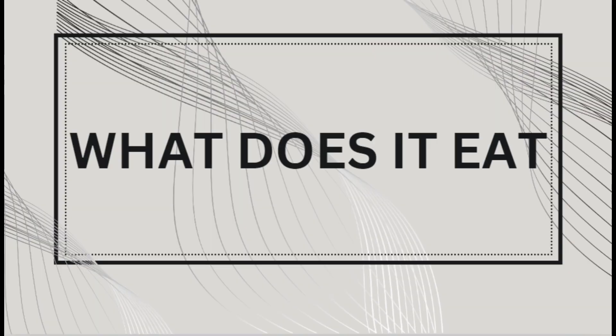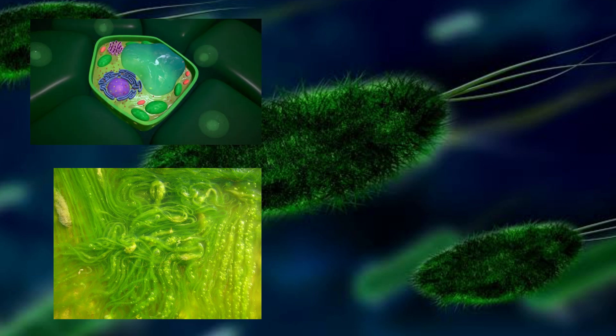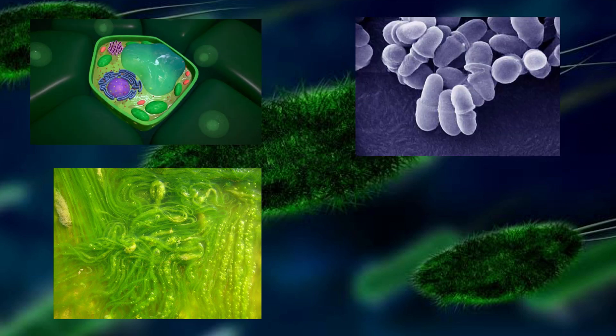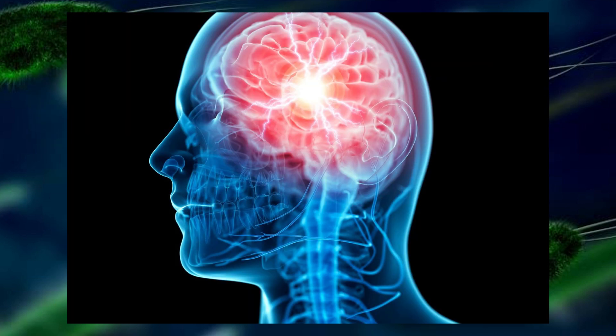Naegleria fowleri most commonly feeds on surrounding bacteria. This is usually algae, plant cells, fungi, as well as microscopic protozoans and metazoans. However, the amoeba also feeds on astrocytes and neurons in your brain if given the opportunity.